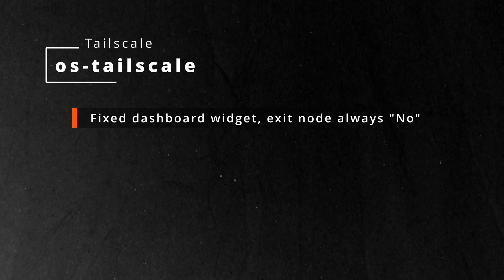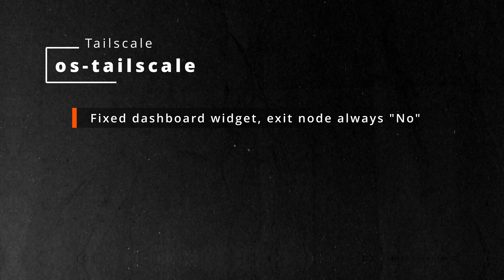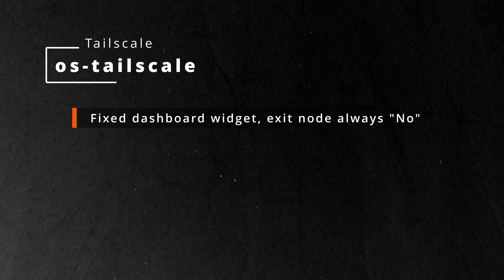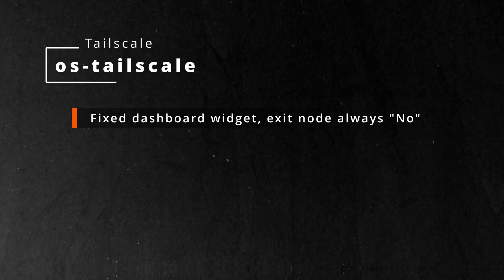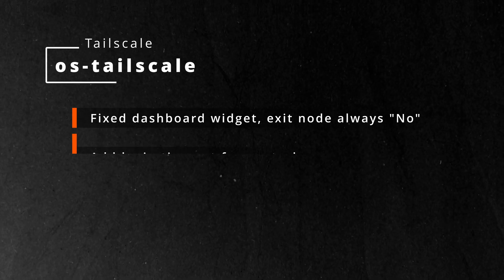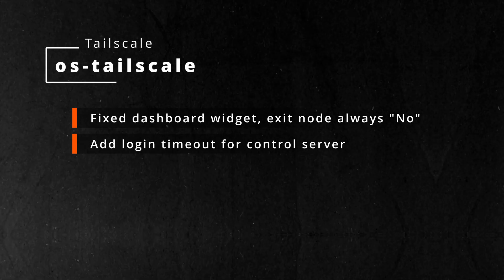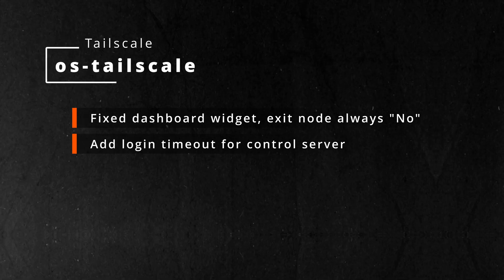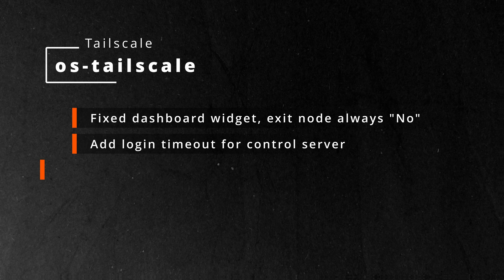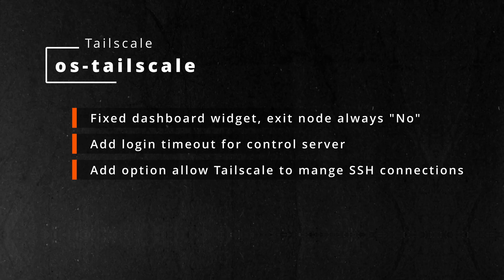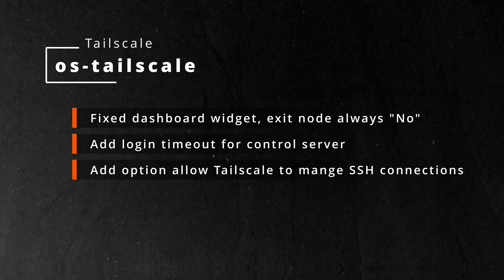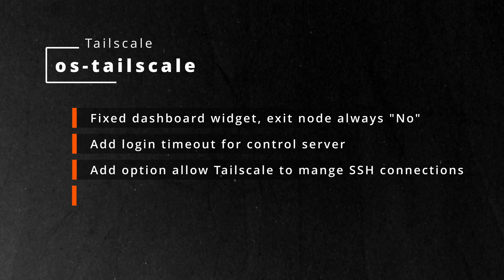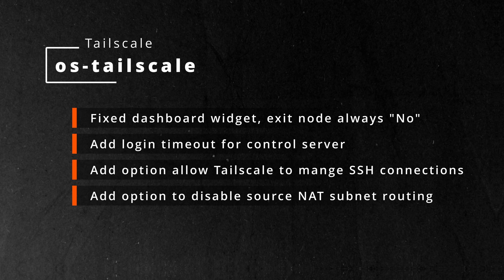The TailScale plugin has also been updated. I've fixed an issue with the dashboard widget where the exit node always showed as known. We've added a timeout for the login control server, which caused OpenSense to hang on boot if it wasn't found. We've added an option to allow TailScale to manage your SSH connections, and I've also added an option to disable source NAT routing — this is experimental at the moment.